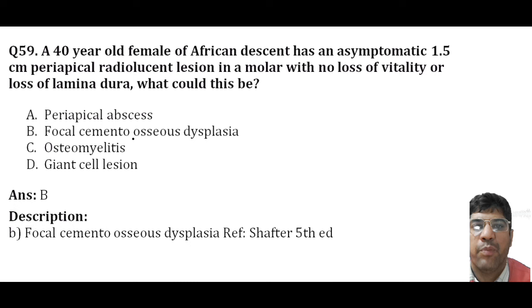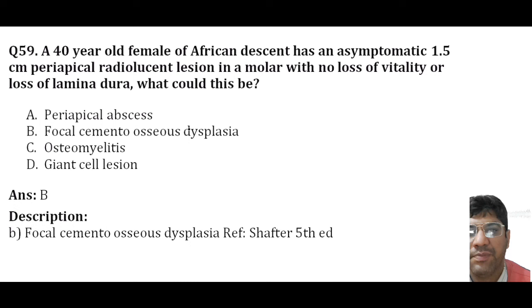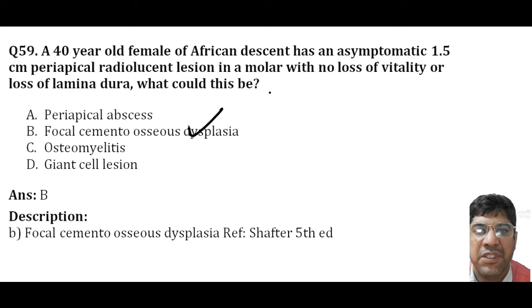A 40-year-old female of African descent has an asymptomatic 1.5 cm periapical radiolucent area in the molar with no loss of vitality or loss of lamina dura. This could be due to focal cemento-osseous dysplasia — a benign fibro-osseous lesion that affects individuals of African descent. On radiograph it may appear radio-opaque or radiolucent with poorly defined radiological borders.